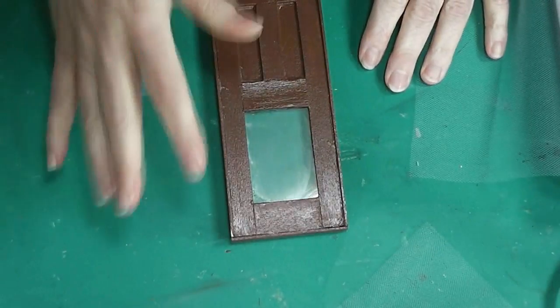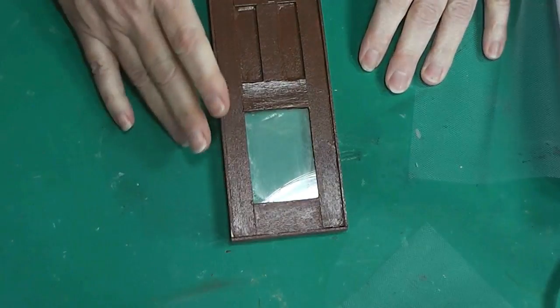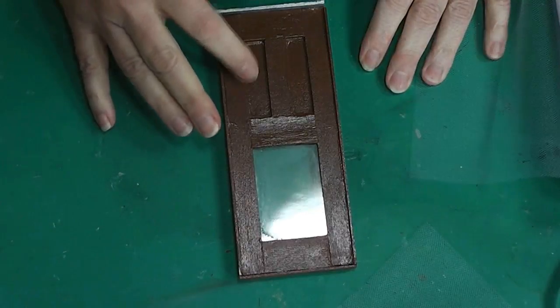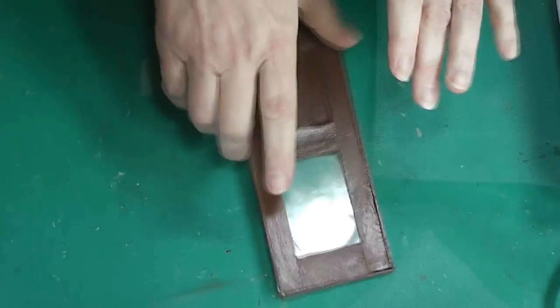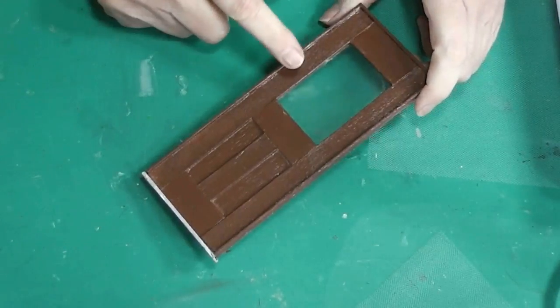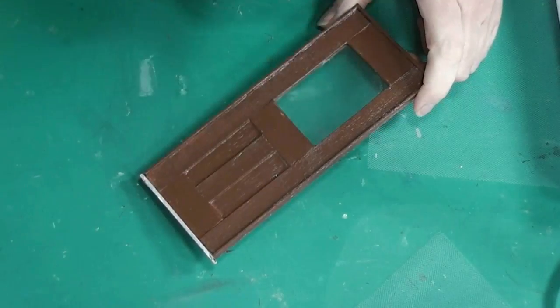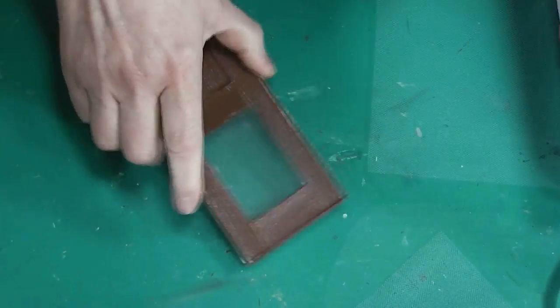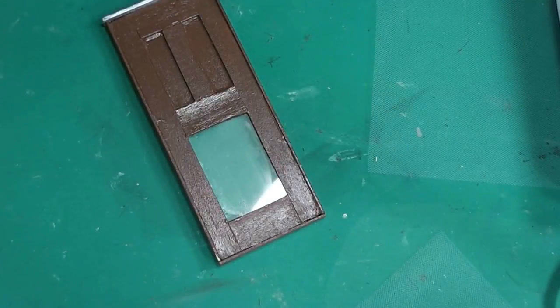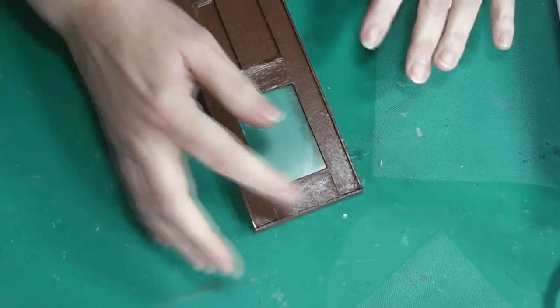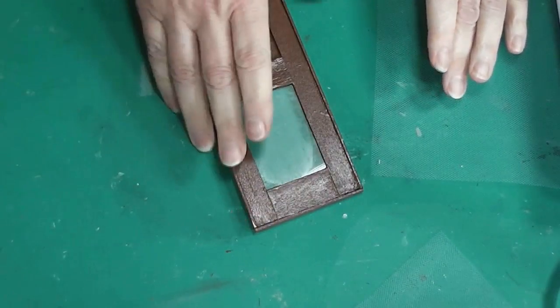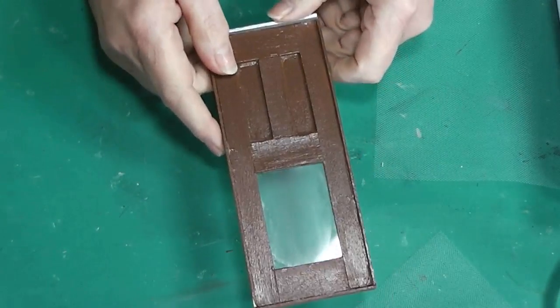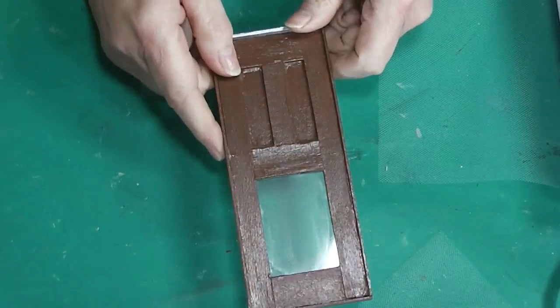Alright, so today we are prepping the door so it will be ready to go into our front porch structure. If you made the door along with me, you might remember we put a window in here. I want to give the dolls a little privacy. It also kind of disguises the interior a little bit. So I'm going to add a cute little curtain to the inside of the door. And since this door is going to be glued in, I need to put this in before I install the door.